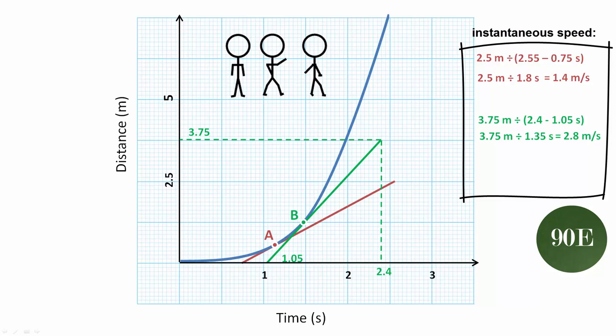As always it's good to do a double check of our numbers and of the gradients here, so we can see that the gradient of the tangent at point B is steeper than that at point A. So we can expect that the instantaneous speed that we calculate for point B will be higher than that for point A, and that's what we found in our calculations.